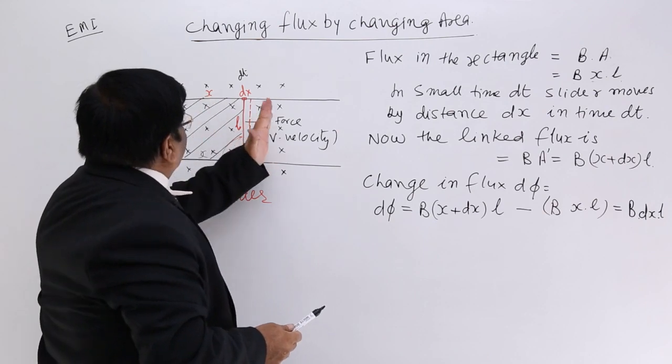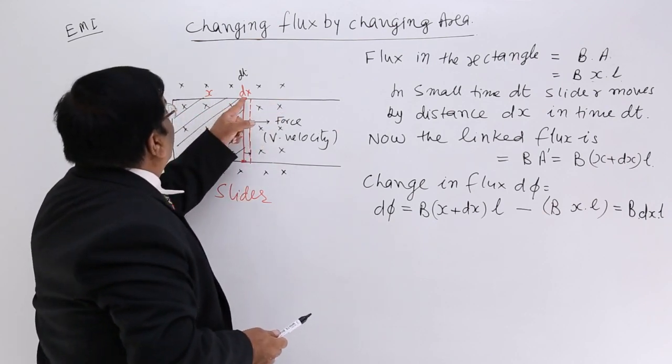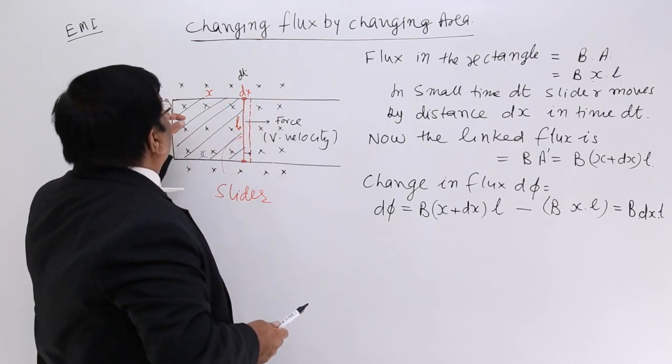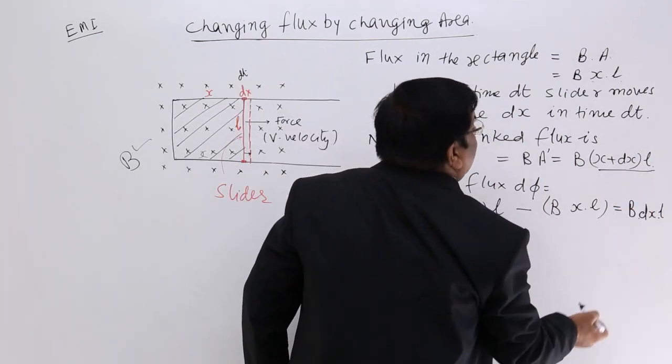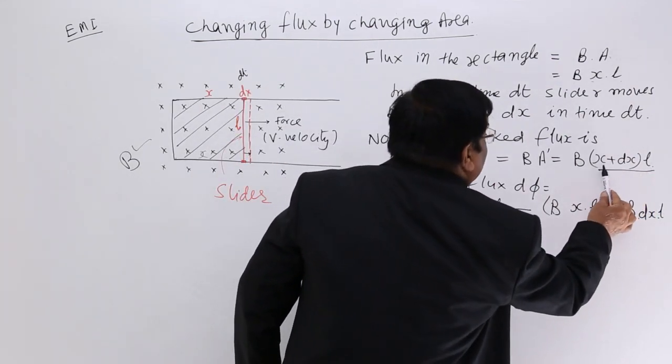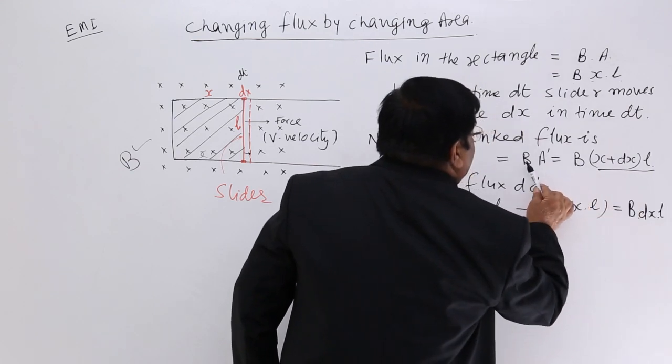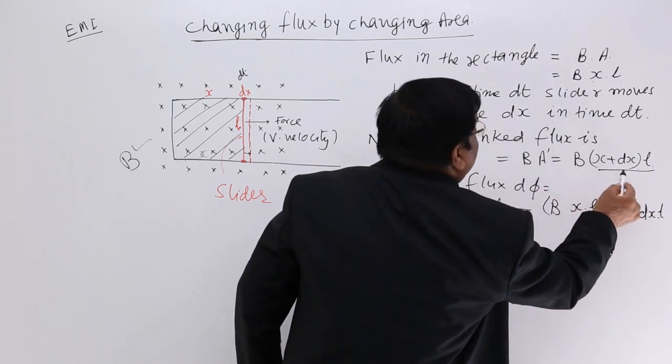But when we push it, this length becomes x plus dx, the area becomes x plus dx into L. So if we multiply this new area with B, what do we get? The new flux.